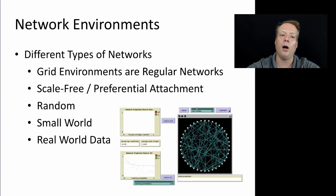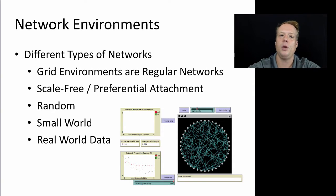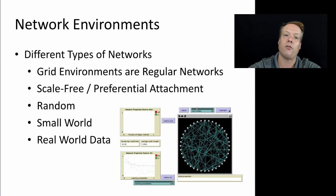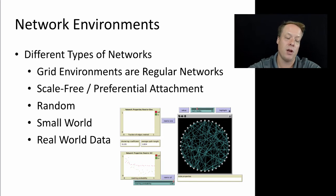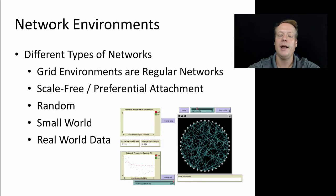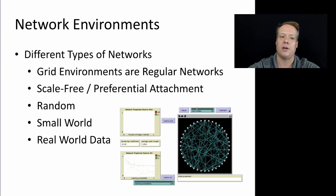You can have a small world network, which sits between a grid network and a random network and has been shown to have some very interesting properties. In fact, many real-world networks have been shown to have properties of small world networks. You can also pull in real-world data and use that to represent your network structure within the model.